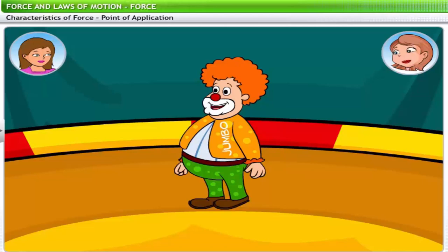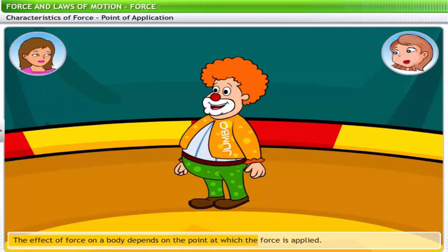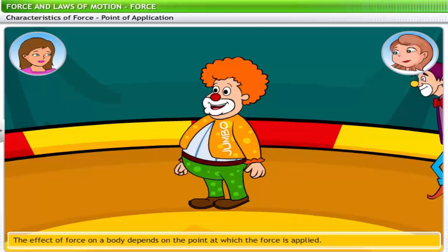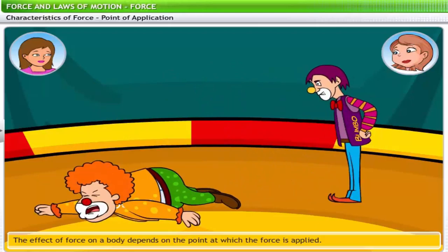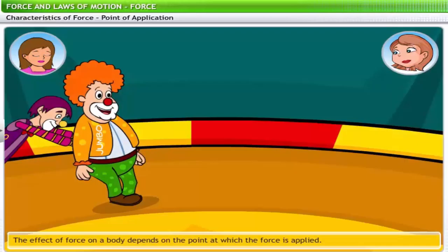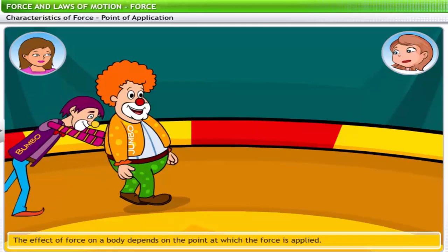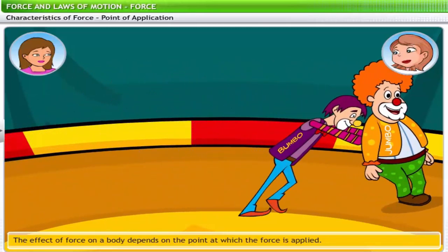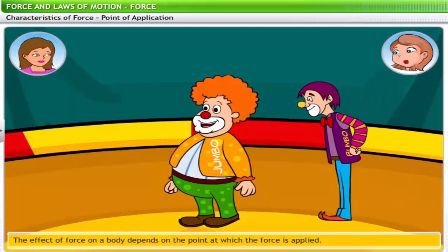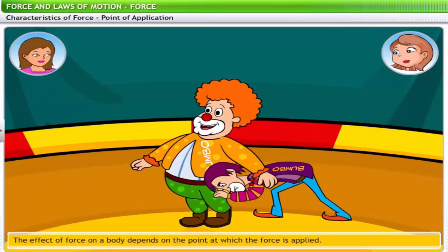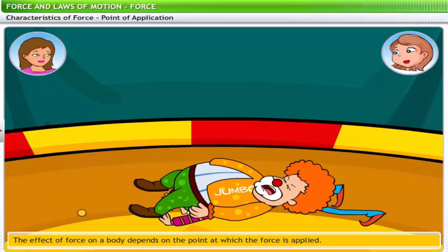Finally, let's look at the point of application of a force. The effect of force on a body depends on the point at which the force is applied. Consider a clown in a circus being pushed by another clown. When the clown is given a push on his upper body, he falls face down. A push on the middle of his body causes him to simply move ahead. When the push is directed towards his lower body, the clown loses balance and falls on his back.